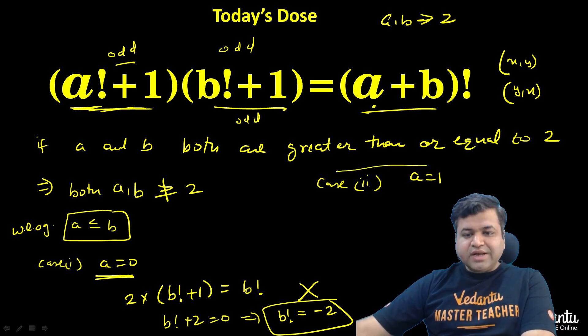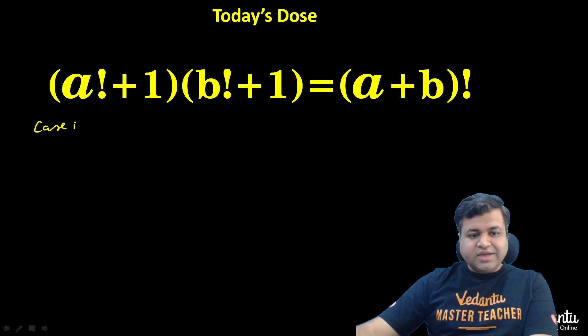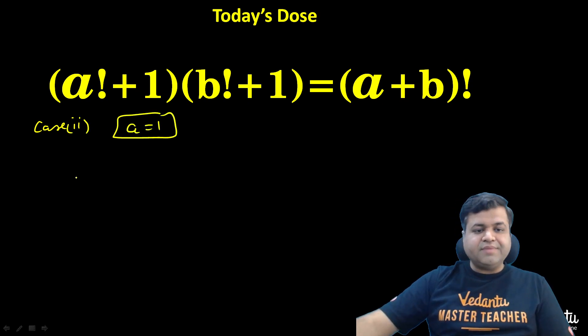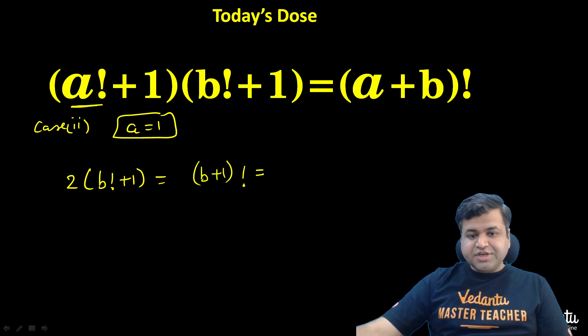Now we need to analyze the second case when a equals 1. Let's analyze the second case where a equals 1. So our equation converts to 1 factorial is 1, 1 plus 1 is 2 times b factorial plus 1. But here it will become b plus 1 factorial, which can be further written as b plus 1 times b factorial. So now the equation gets converted to 2b factorial plus 2 equals b plus 1 times b factorial.